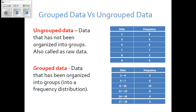The second type is group data. Group data means that data has been organized into groups in a Frequency Distribution. For Frequency Distribution, sometimes we use ungrouped and sometimes grouped data, but most probably for Frequency Distribution we normally use group data.